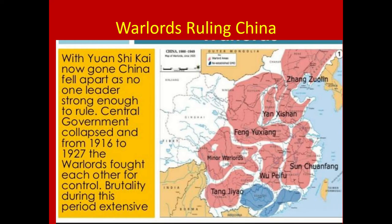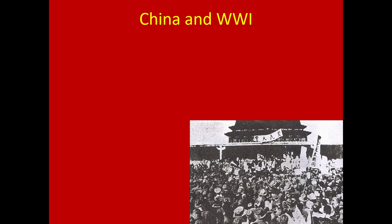Here you can see a visual representation of the different warlords ruling China at this point — you don't need to commit these to memory, just a map of what's going on. Then of course we have World War One, which breaks out in 1914.